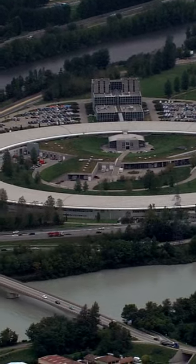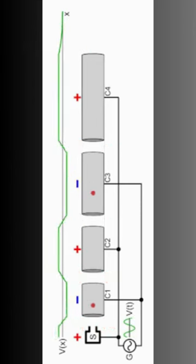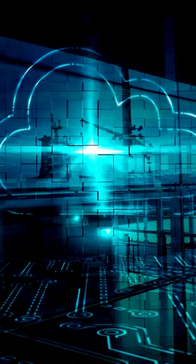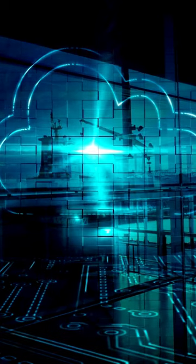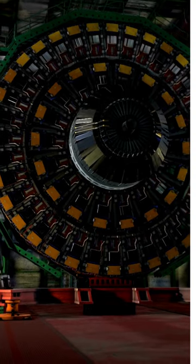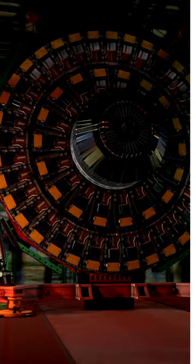A synchrotron light source is a source of electromagnetic radiation, usually produced by a storage ring, for scientific and technical purposes. First observed in synchrotrons, synchrotron light is now produced by storage rings and other specialized particle accelerators, typically accelerating electrons.